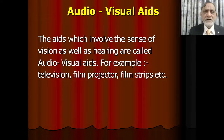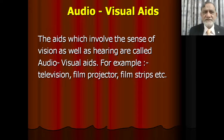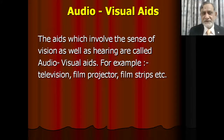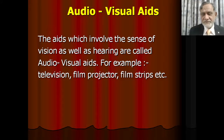The third type is combined audio plus visual aids. The aids which involve the sense of vision as well as hearing are called audio-visual aids. For example, TV — we can see and hear — film projector, and film strips, etc.